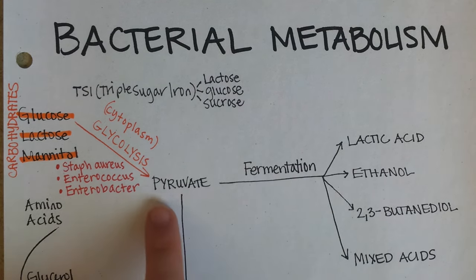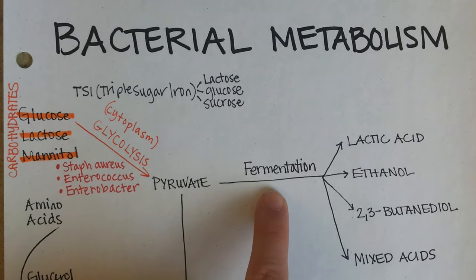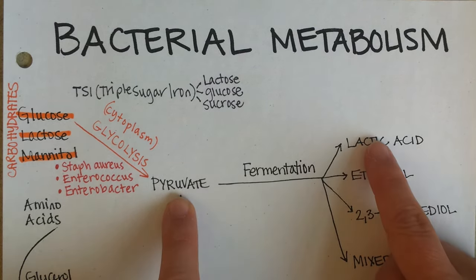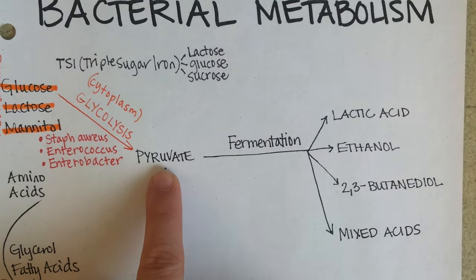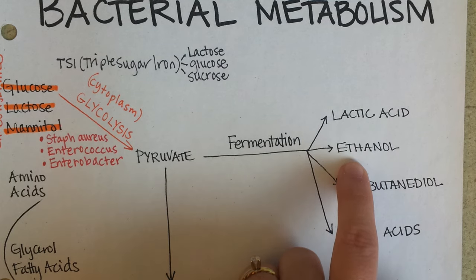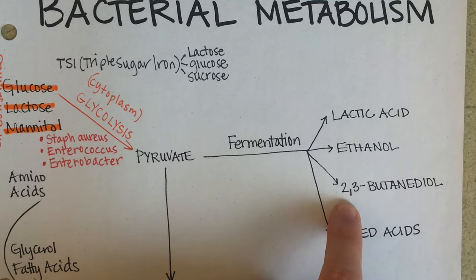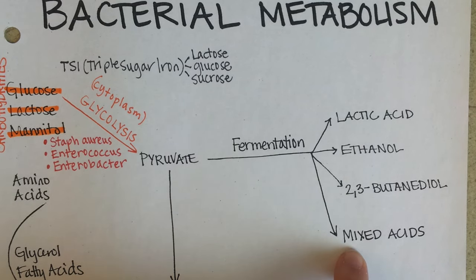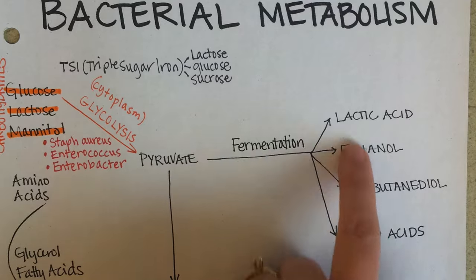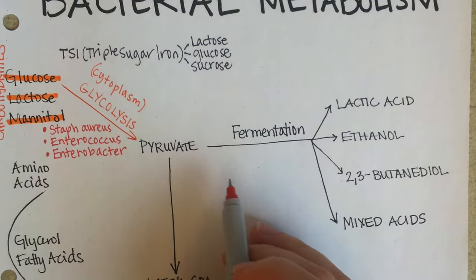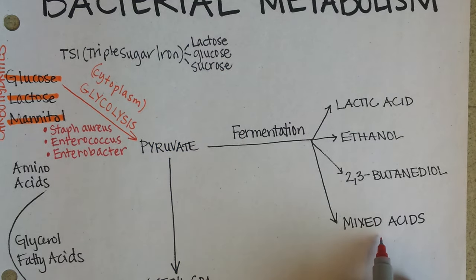After glycolysis comes the next process: fermentation. Fermentation is converting pyruvate into one of four products: lactic acid, ethanol or alcohol, 2,3-butanediol (another kind of alcohol, but not something you would drink), and mixed acids — meaning they can make a little bit of all of these things. It depends on which enzymes the bacteria have as to which of these they can produce.